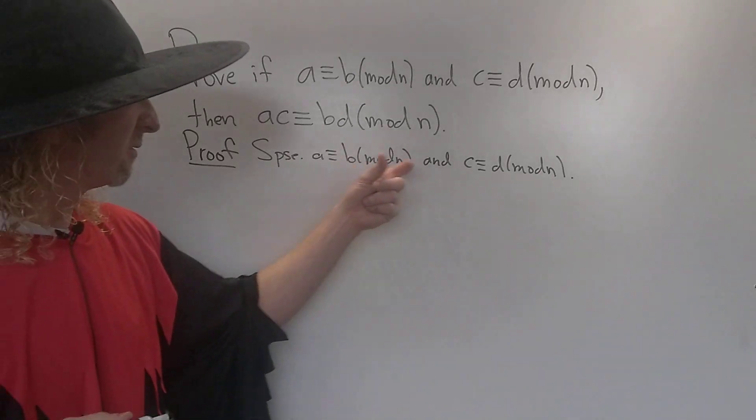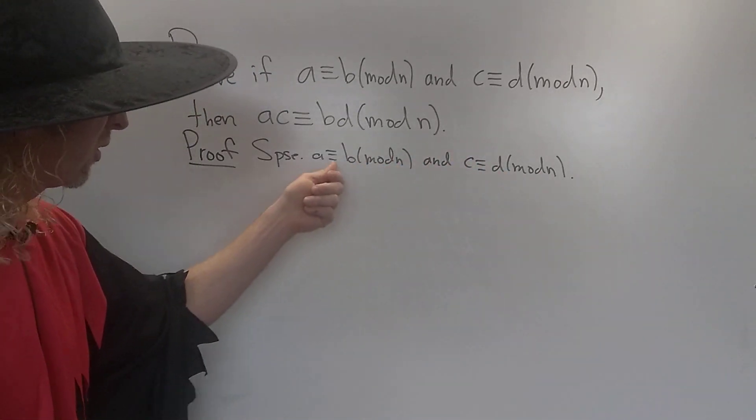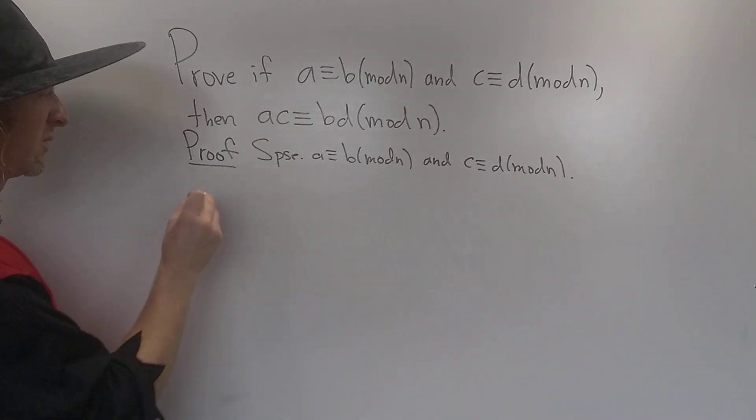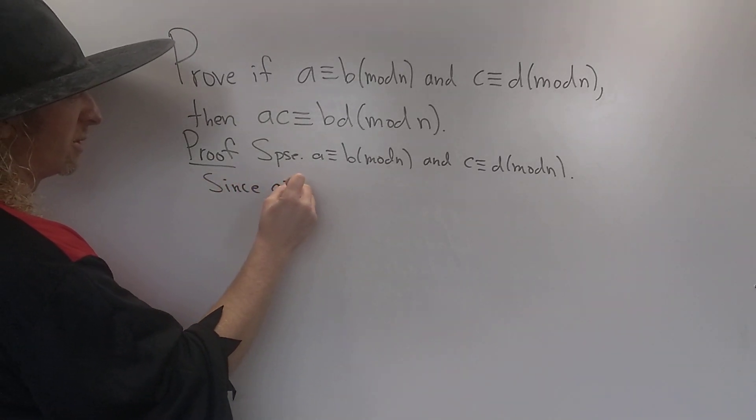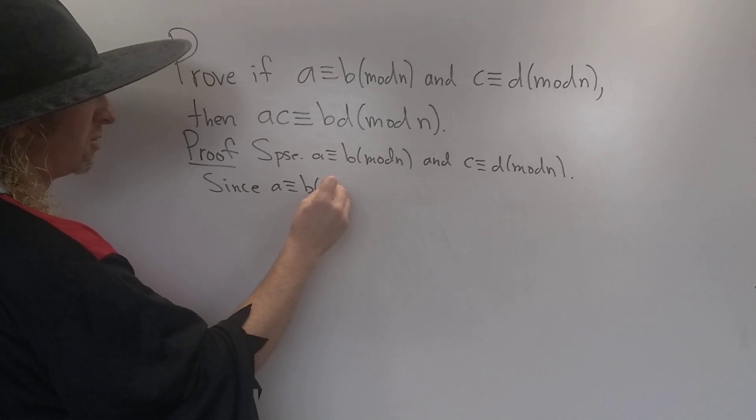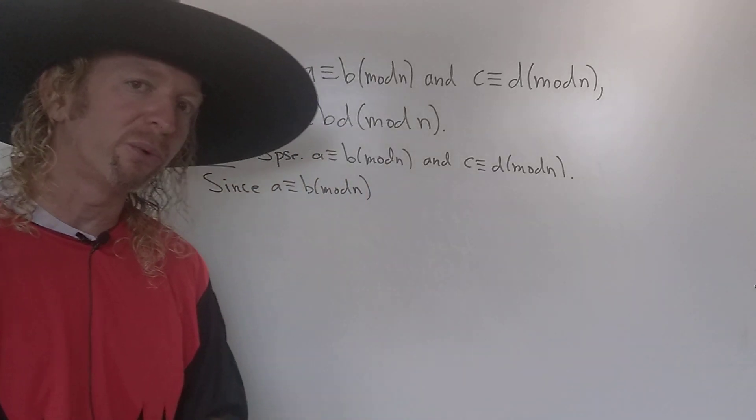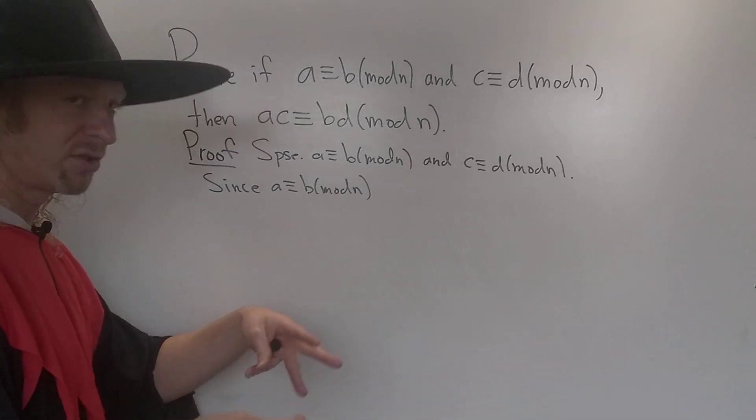And we have to kind of use these somehow, right? So let me go ahead and write this down again, and just emphasize what each one means. So since A is congruent to B modulo N, that's typically what you do in proof, right? You write down the hypothesis, and then you just write down what it means, and then just go from there.